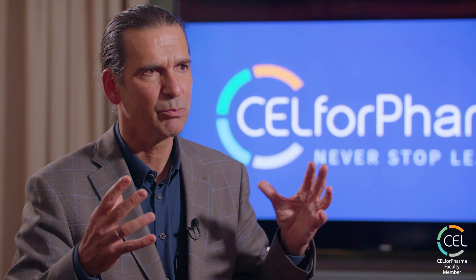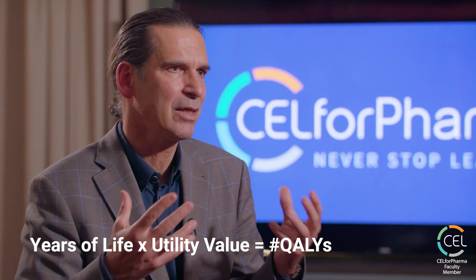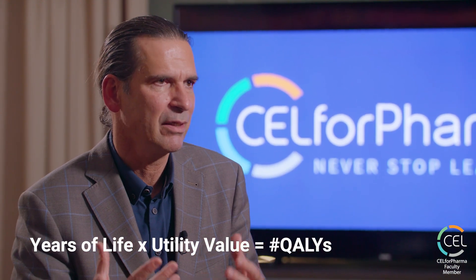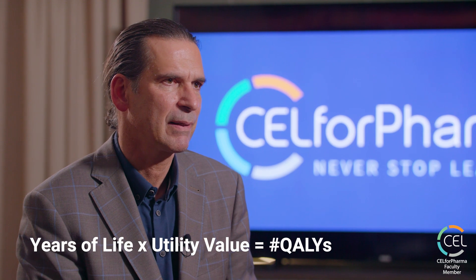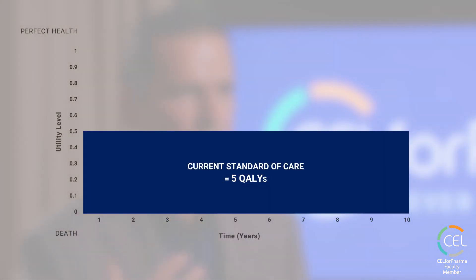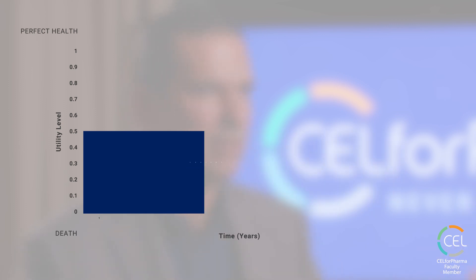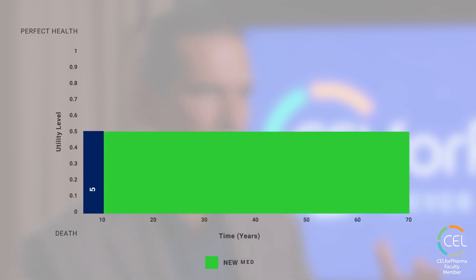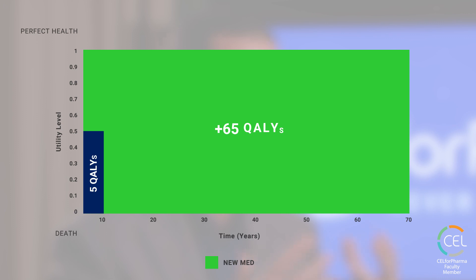10 years in perfect health would be 10 QALYs, but 10 years in only half the health is just 5 QALYs. Now imagine a fantastic new treatment that can cure that patient from a very severe disease with a short life expectancy and poor quality of life — suddenly turning into a life expectancy of 70 years in perfect health, giving us 70 QALYs.